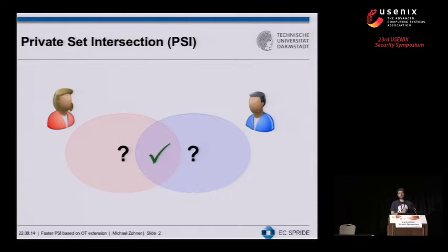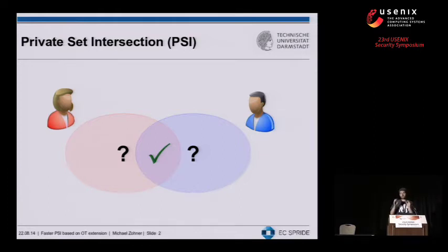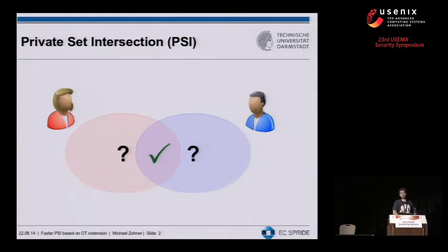Let's have a look at private set intersection. Unlike the two previous talks, we're not focusing on correctness here — what we actually want is privacy. We have two parties, Alice and Bob, and they both have their input sets and want to obtain the intersection of their inputs without leaking any information about those inputs. They can't just disclose their inputs to each other because these inputs may be highly private.